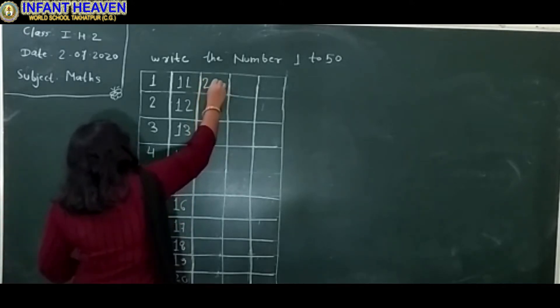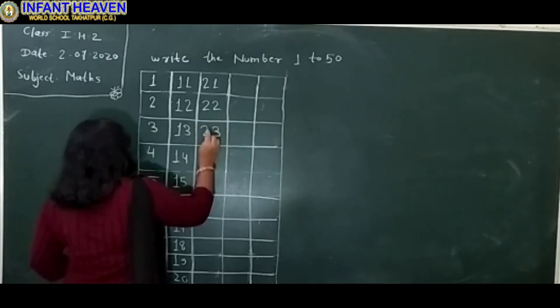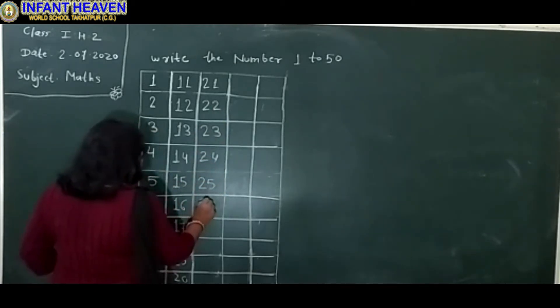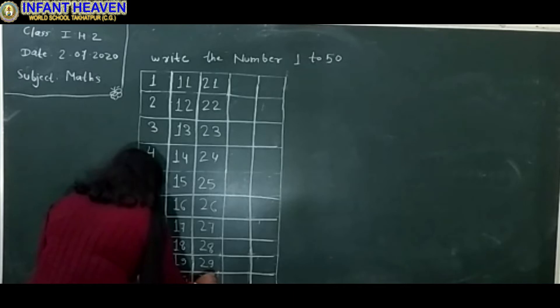2 by 21, 22, 23, 24, 25, 26, 27, 28, 29, 30, 40.